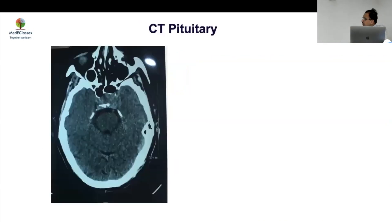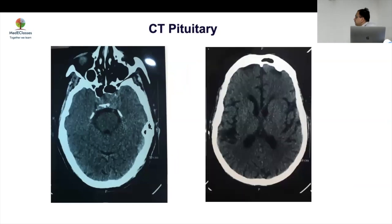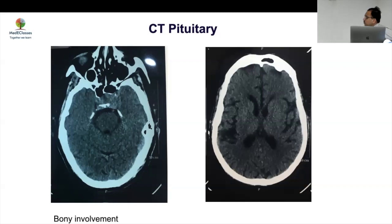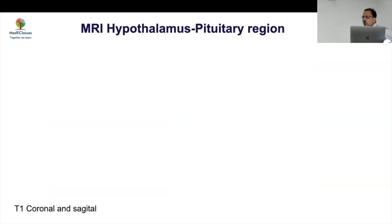CT of the pituitary — not much use at all. But it can sometimes show basal exudates, which could indicate tuberculosis. You can have a large lesion or adenoma which can be picked up, and it will give you bony involvement, hemorrhage, and calcification. But by far, what you are looking at is MRI.